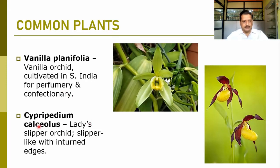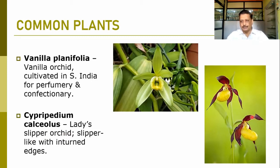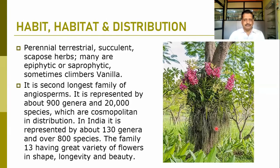This is the Cypripedium species, where we find the lady slipper orchid. These are slipper-like structures which are developed, so it is known as the lady slipper. These plants from family Orchidaceae are mostly perennial, terrestrial, and succulent — they can be scapose herbs. Many are epiphytic and saprophytic, sometimes climbers like Vanilla.